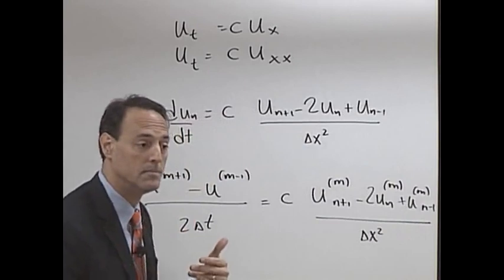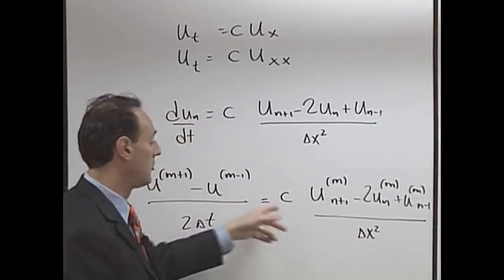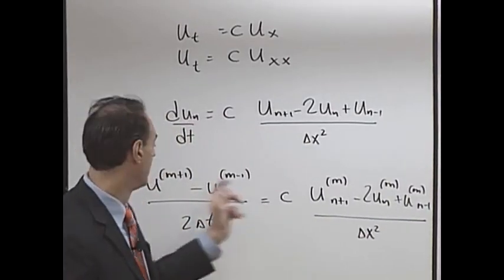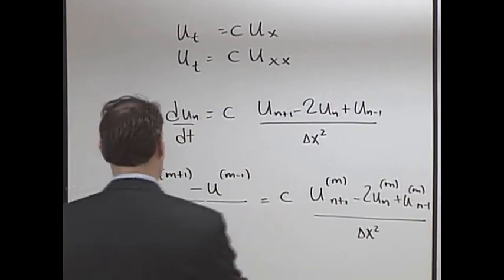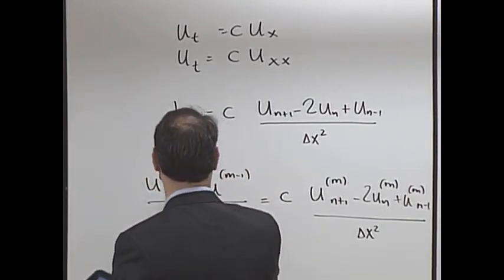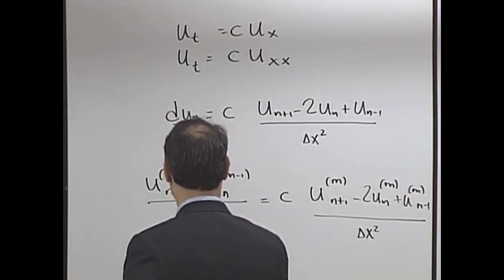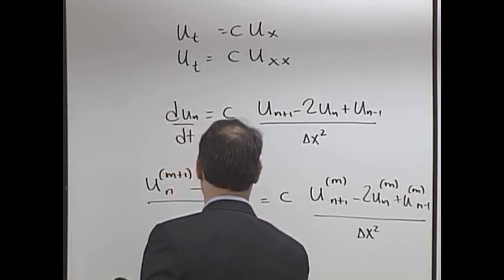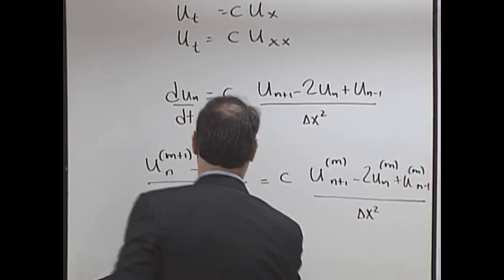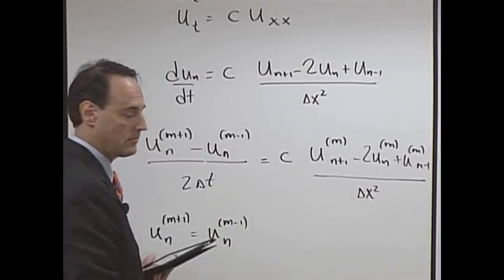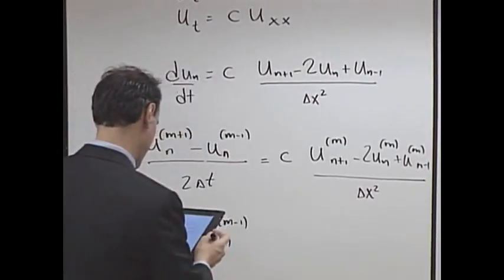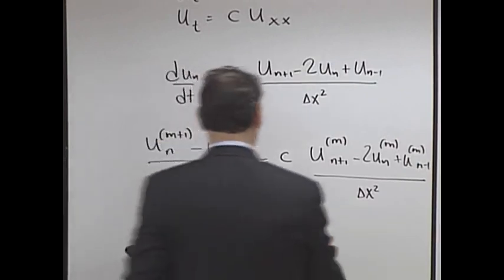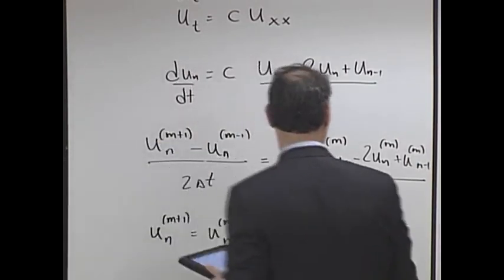And the idea behind the leapfrog is you don't use the current point and future point—you use the current point and one past. And that's equal to this over here. And let's evaluate this side at the current time. Now I'm going to multiply by two delta t, move that over to the other side.